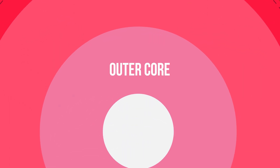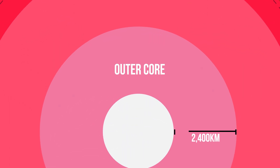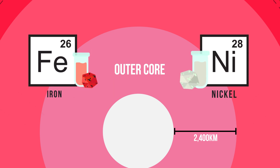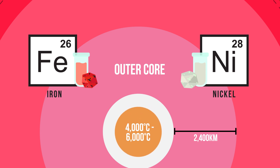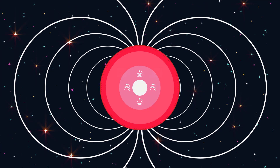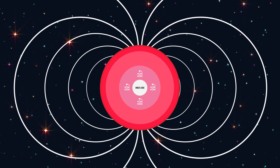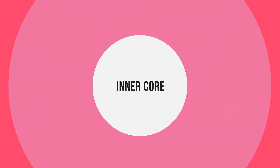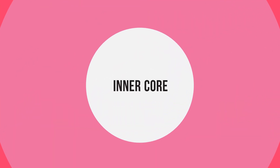The outer core is the layer surrounding the inner core. It is approximately 2,400 kilometers thick, mostly made up of liquid iron and nickel at a temperature between 4,000 to 6,000 degrees Celsius. The flow of the liquid here is what creates Earth's magnetic field.